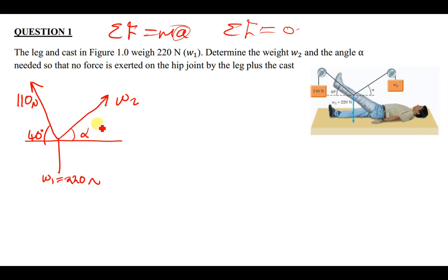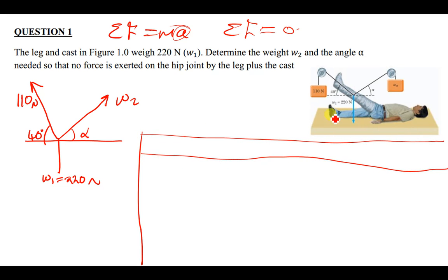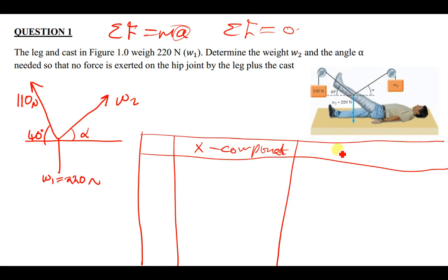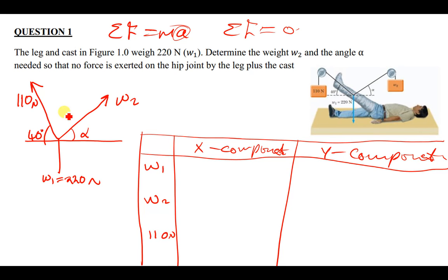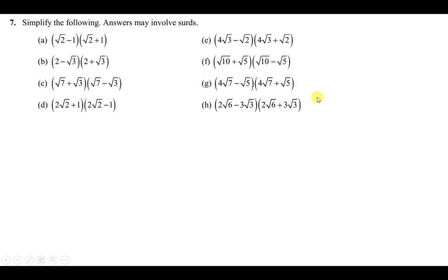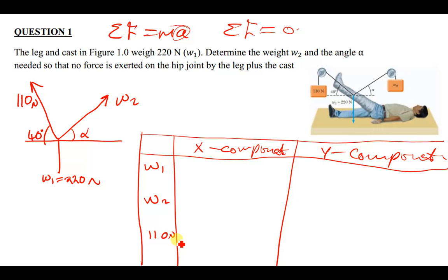So let us now do this question. I'm going to draw a table of components, which I'll use to solve it. I'll have the X component and the Y component. For the rows, I have W1, then W2, then 110 newtons. This 110 newtons isn't given any variable name, so I'll just write it as 110 newtons.